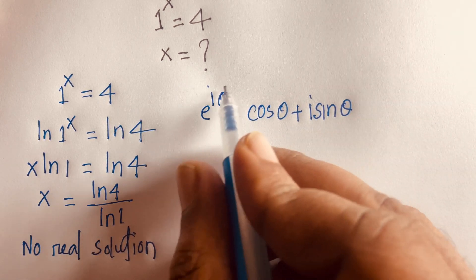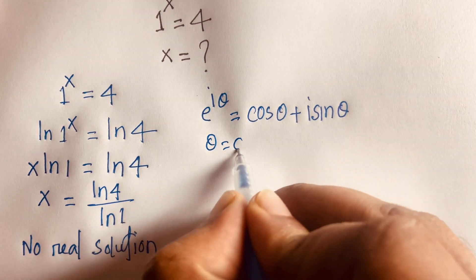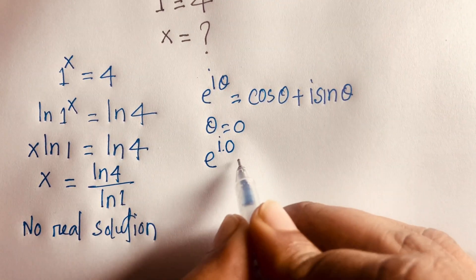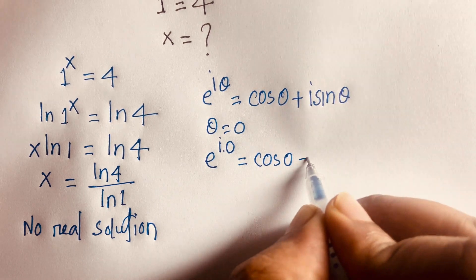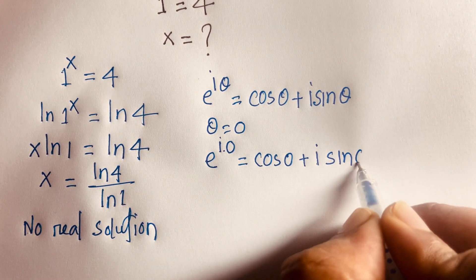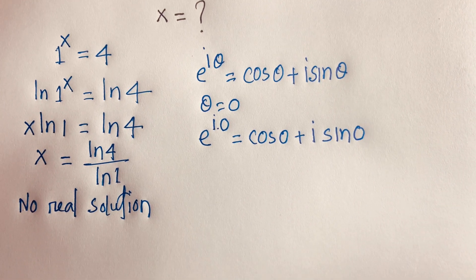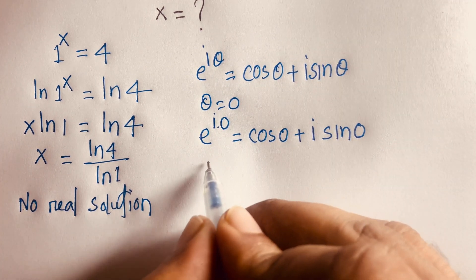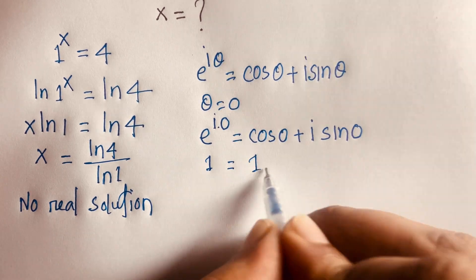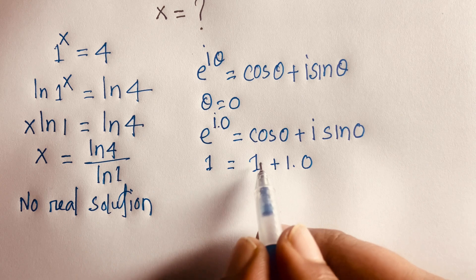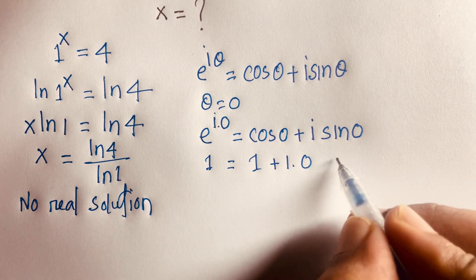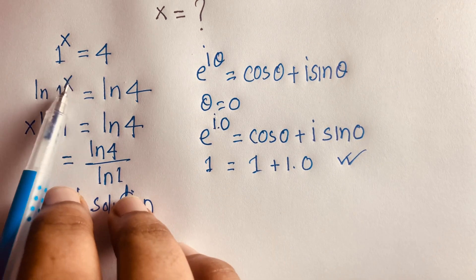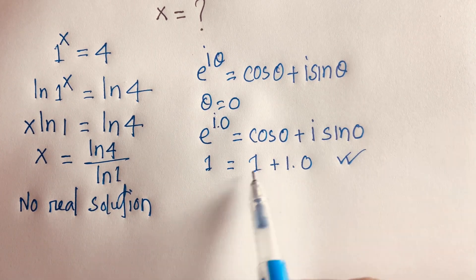If you think θ is equal to 0, I can say e to the power i·0 is equal to cos 0 plus i·sin 0. So e to the power 0 equals 1, and cos 0 is 1 and sin 0 is 0, so 1 equals 1. This is correct. So this 1 and this 1 are the same.